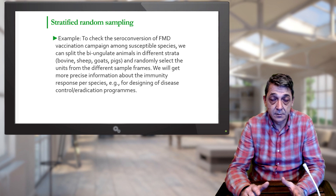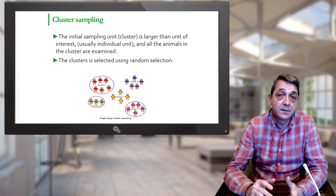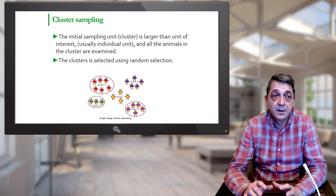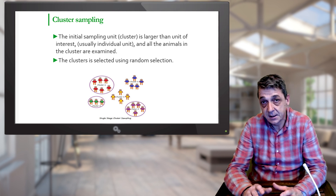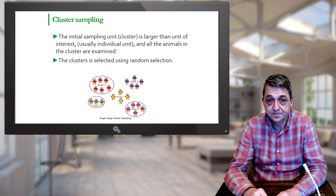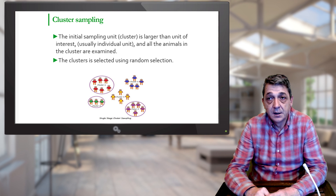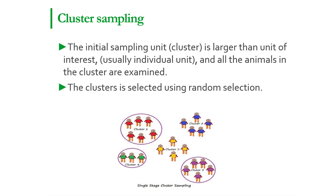In cluster sampling, the unit of interest is usually smaller than the sampling unit. For example, if the unit of interest is individual animals but we don't have a complete identification system and only have a list of farms, we make a random selection of farms and then sample all animals within each selected cluster. Cluster sampling can be used when there is a partial system of identification, and it is mainly used also to check differences between results within the clusters.